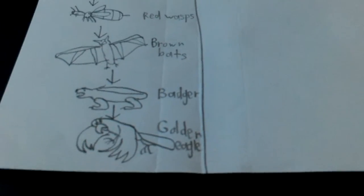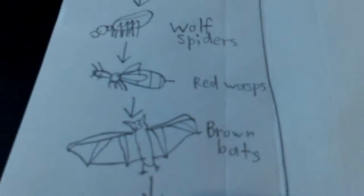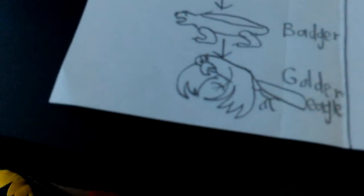Now what eats brown bats? How about badgers. What animal eats the badger? How about golden eagles. No animal eats the golden eagle — that means golden eagles are the top predator, the apex. So that's my land food chain: grass, grasshoppers, wolf spiders, red wasps, brown bats, badgers, and golden eagle.